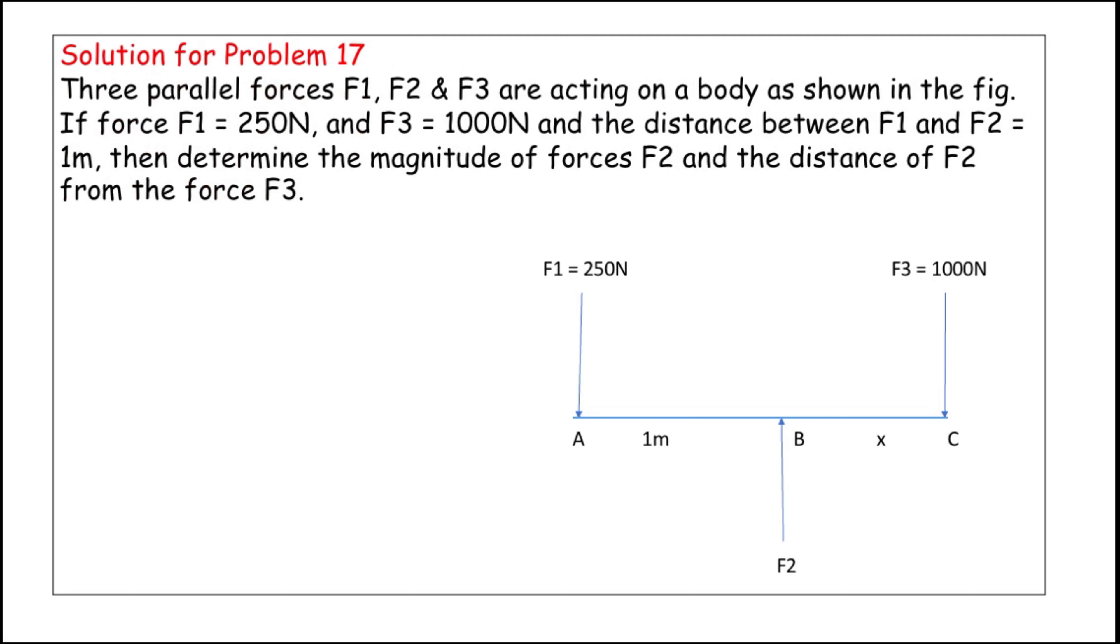So, see the diagram. The point A, B, C. At the point A, F1, 250 Newton is acted. At the point B, F2 is acted. We have to find the value of F2. And the point C, F3 is acted, 1000 Newton. The distance between A, B, that is F1 to F2, is 1 meter. The distance between B, C is not found. We have to find that. I substitute X in there. So, it is the distance between F2 and F3. Now, see the given data.